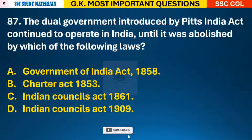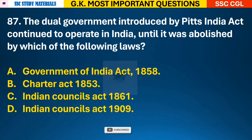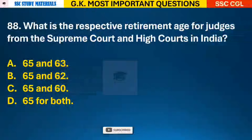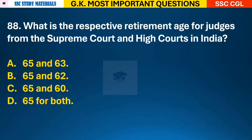Question 87: The dual government introduced by Pitt's India Act continued to operate in India until it was abolished by which of the following laws? Answer A - Government of India Act 1858. Question 88: What is the respective retirement age for judges from the Supreme Court and High Court in India? Answer B - 65 and 62.